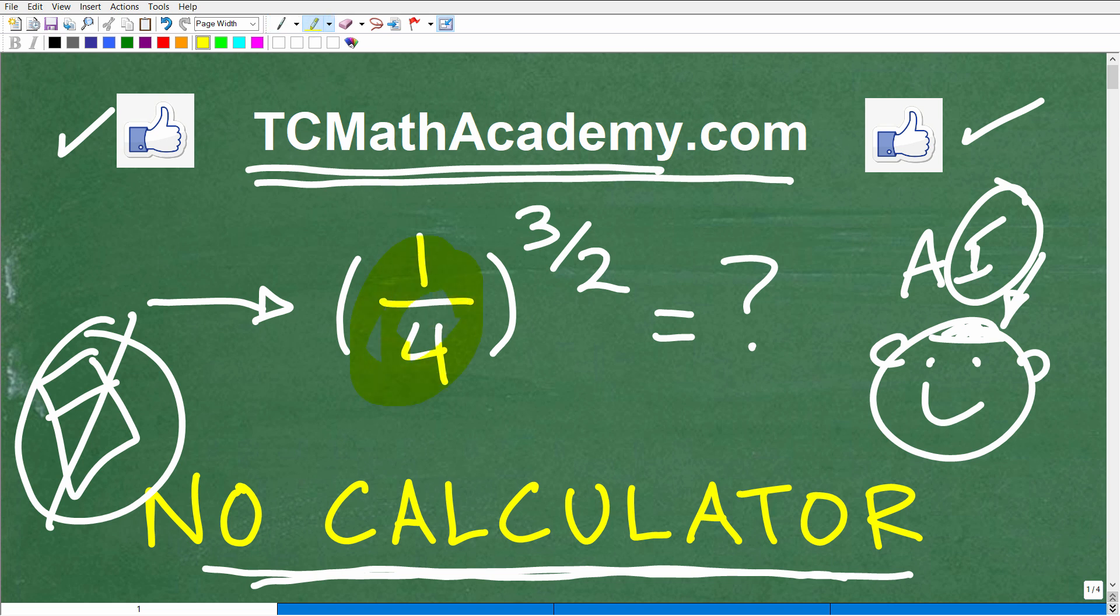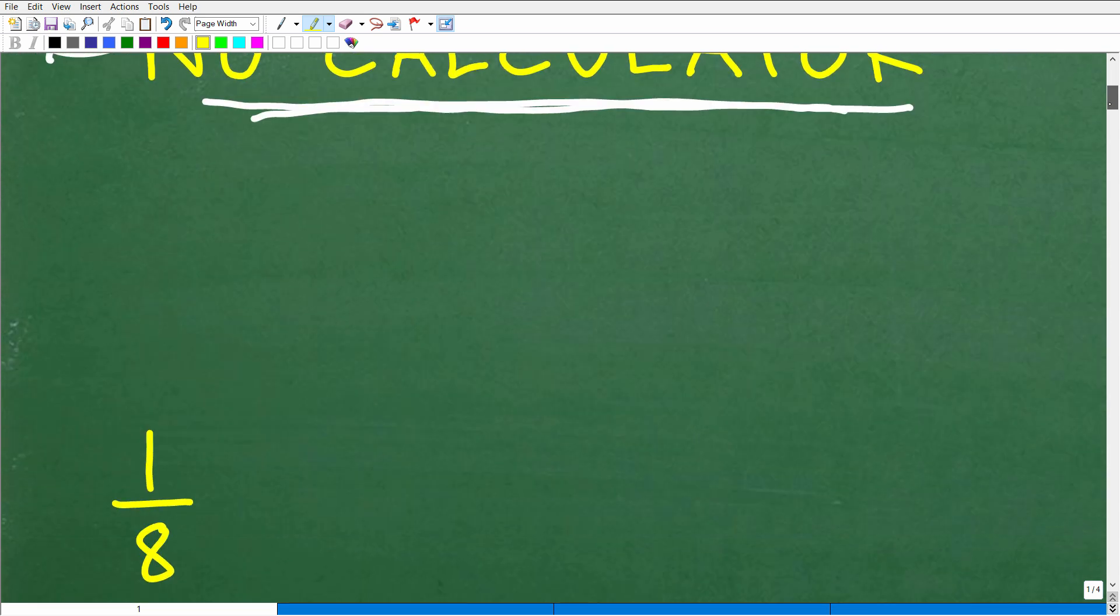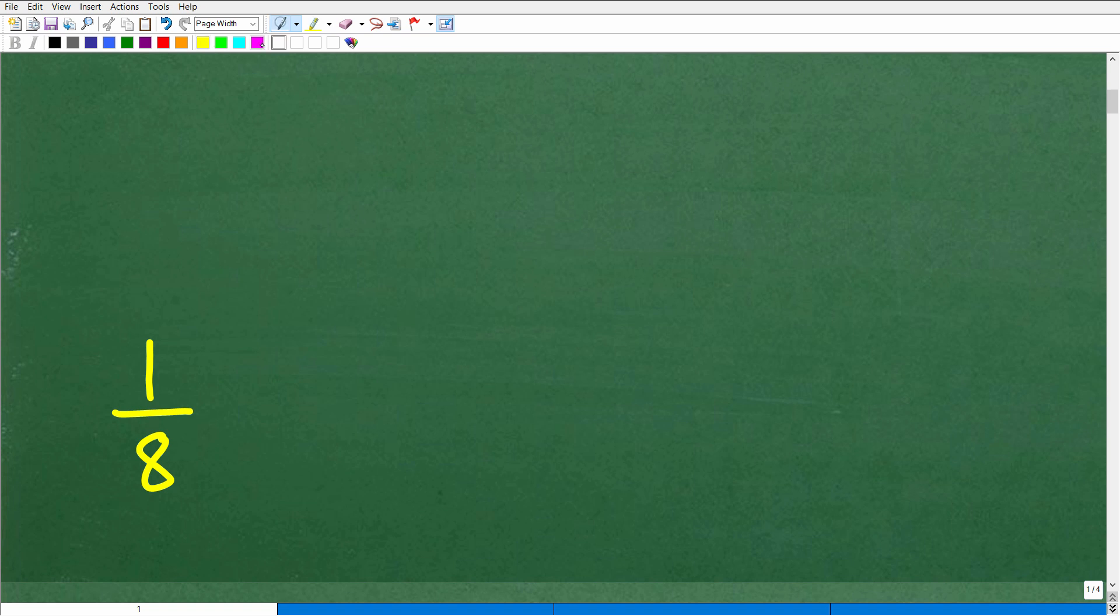Now, okay, so one-fourth to the three-halves power, what is that equal to? Well, let's go ahead and take a look at the answer right now. It is equal to this lovely fraction right here, one-eighth. Okay, so how did you do?